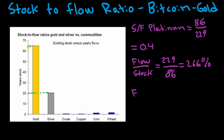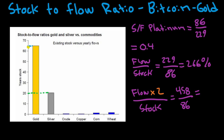What would happen to platinum if we double the flow? We'd have 458 divided by 86, which equals around 532%. So when it comes to platinum, doubling the annual supply would have a huge impact on the total supply — far more dramatic than it would for gold. Because platinum has a very low stock-to-flow ratio, an increase in supply affects its price much more significantly than the same change would affect gold.